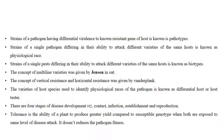Strains of a pathogen having differential virulence to non-resistant genes of the host are known as pathotypes. Strains of a single pathogen differing in their ability to attack different varieties of the same host are physiological races. Strains of a single pest differing in their ability to attack different varieties of the same host are known as biotypes. The concept of multiline varieties was given by Johnson and Jensen in oats in 1952. Vertical and horizontal resistance terms were given by Van der Plank. Varieties of a host species used to identify physiological races of a pathogen are known as differential hosts or host testers. There are four stages of disease development: contact, infection, establishment, and reproduction.